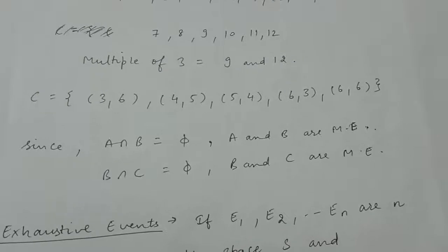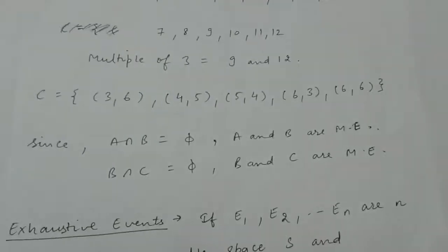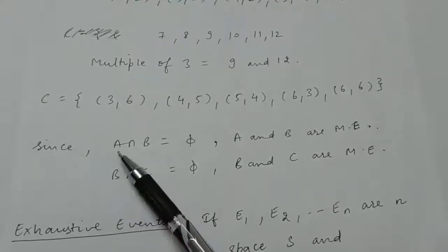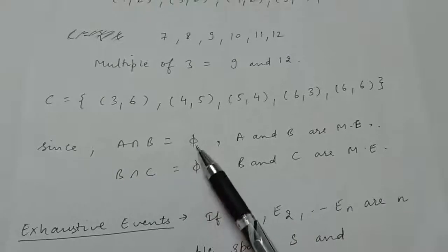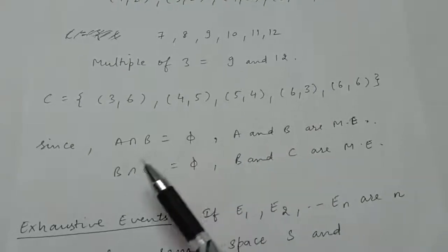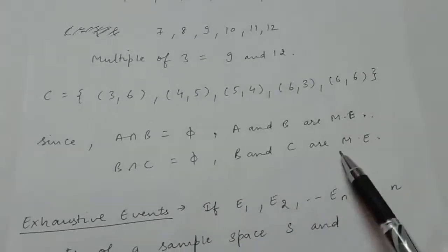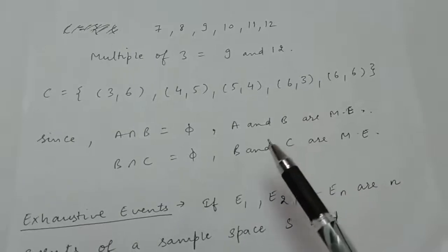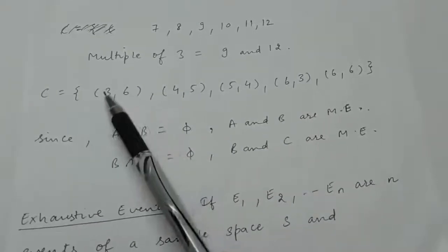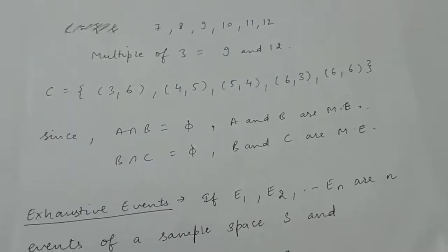They have asked which of these events are mutually exclusive. The intersection of A and B is phi, so A and B are mutually exclusive. The intersection of B and C is also phi, so B and C are mutually exclusive. A and C are not mutually exclusive because the ordered pair (3,6) exists in both C and A.